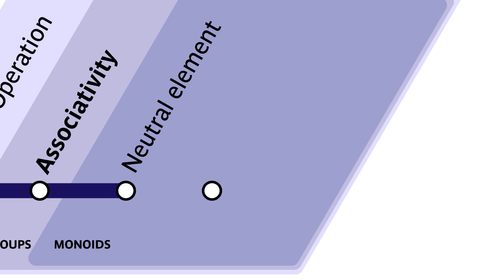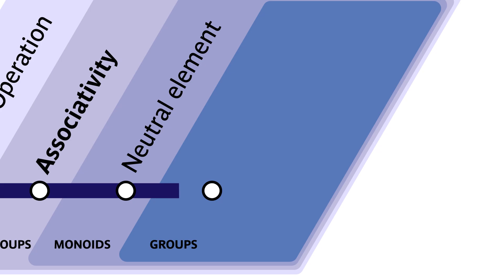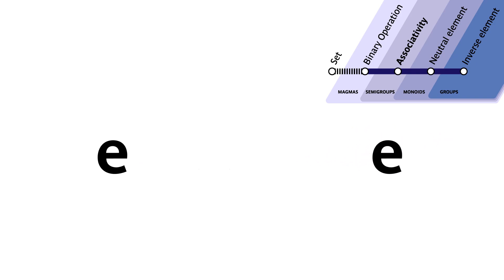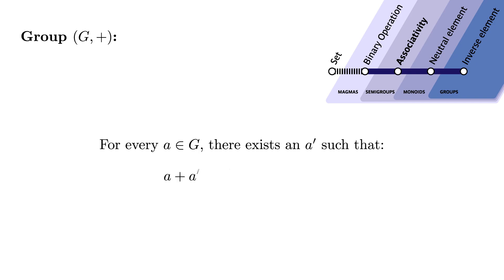Our third property allows us to enter the territory of one of the most famous structures, groups. Our first stop there is called inverse elements. Where before I said that we had an element which was in some way lazy, we now observe that everyone's elements can be made lazy. More, we now require that for every A in G, there exists an A prime such that A plus A prime equals A prime plus A equals E. In some way, A prime is a sort of doppelganger of A with respect to the plus operation.